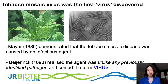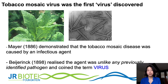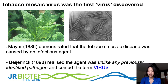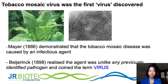Tobacco mosaic virus was the very first virus to be discovered, around the late 1800s. Meyer demonstrated that tobacco mosaic disease seen on tobacco plants is caused by an infectious agent, and later Beyrin realized the agent was unlike any previously identified pathogen and coined the term 'virus.' It is good to remember that plant viruses are often given names based on the first plant in which they were identified.